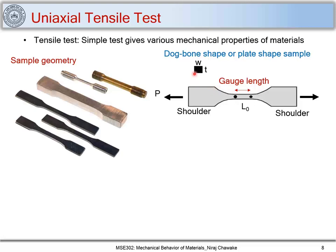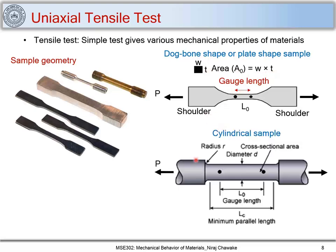The cross-section area of the flat sample is shown where W is the gauge width and T is the gauge thickness, so the area is W times T. For a cylindrical sample, the shoulders are stretched with a uniaxial force P, and we are interested in the deformation between the two gauge points. The cross-section area A0 equals pi r squared.